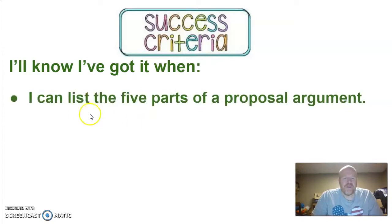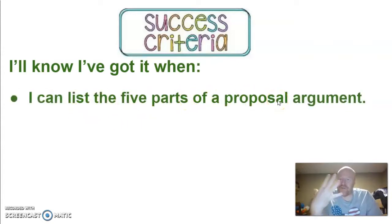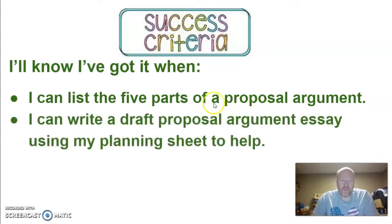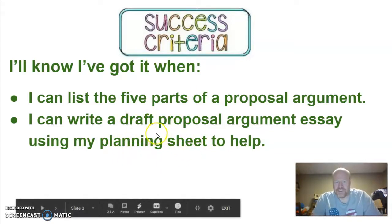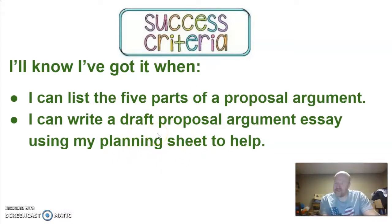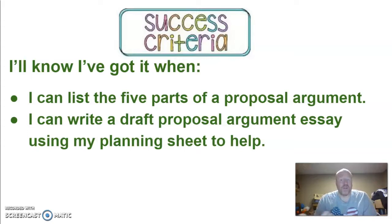It's important. You'll know you've got it when you can list the five parts of a proposal argument — there are five parts we're going to go over in a couple minutes — and then write a draft proposal argument using your planning sheet. If you've done the work and already had the planning sheet done, which you should, the essay writing should go fairly smoothly.